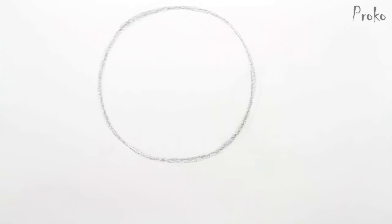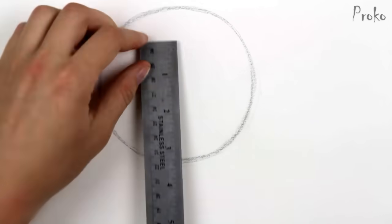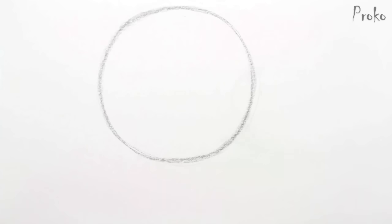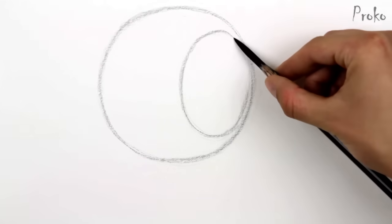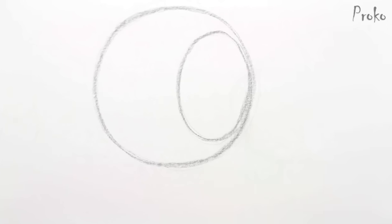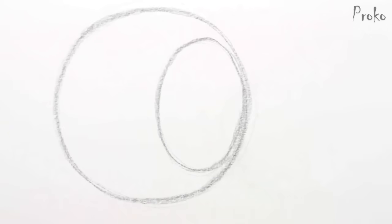But seriously, make sure that it looks like a circle and at least the height and width are the same. The oval is a bit more tricky. The height will always be the same no matter what angle you're drawing the head from. It's two-thirds the height of the circle.